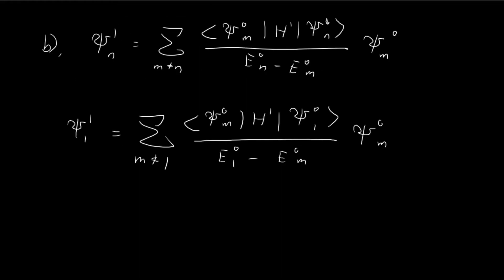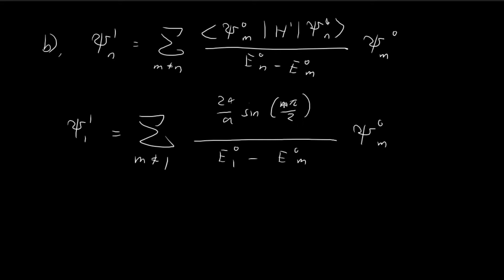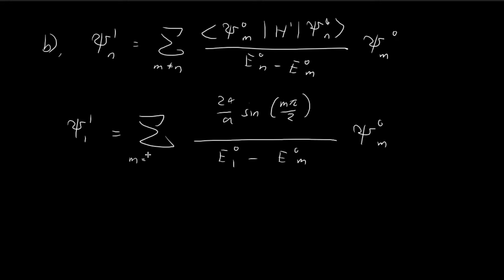Updating our expression, the numerator becomes 2α/a · sine(mπ/2). When m is an even natural number — 2, 4, 6, 8 — this gives sine(π), sine(2π), etc., all equal to zero. So m cannot be even. We can also see that m ≠ 1 since we're correcting the ground state. Therefore m can only be odd numbers other than 1: m = 3, 5, 7, and so on. Since we only need the first three terms, we evaluate m = 3, 5, and 7.